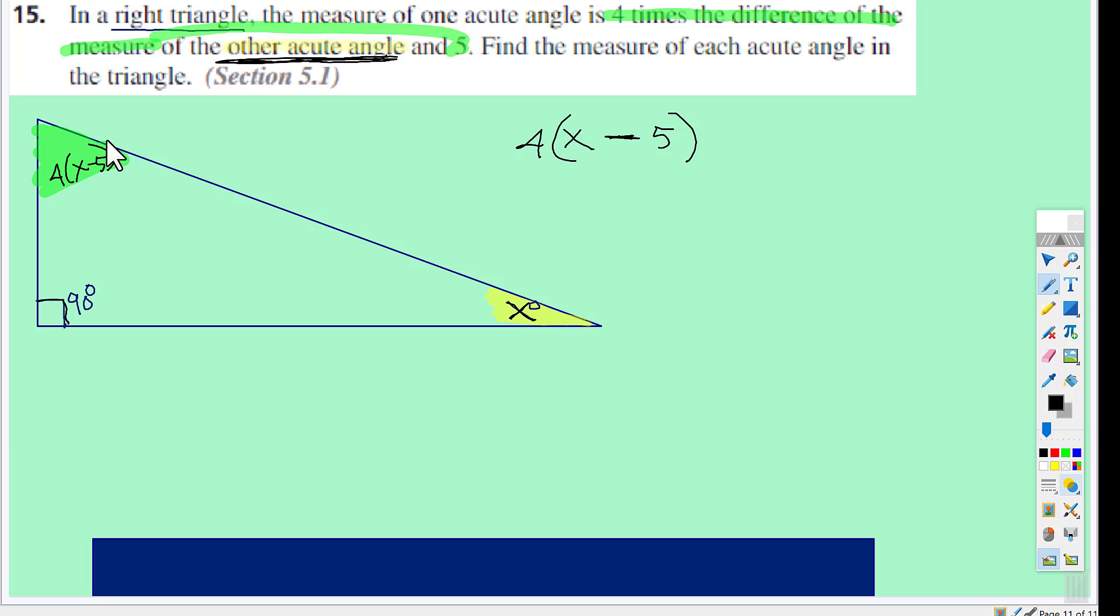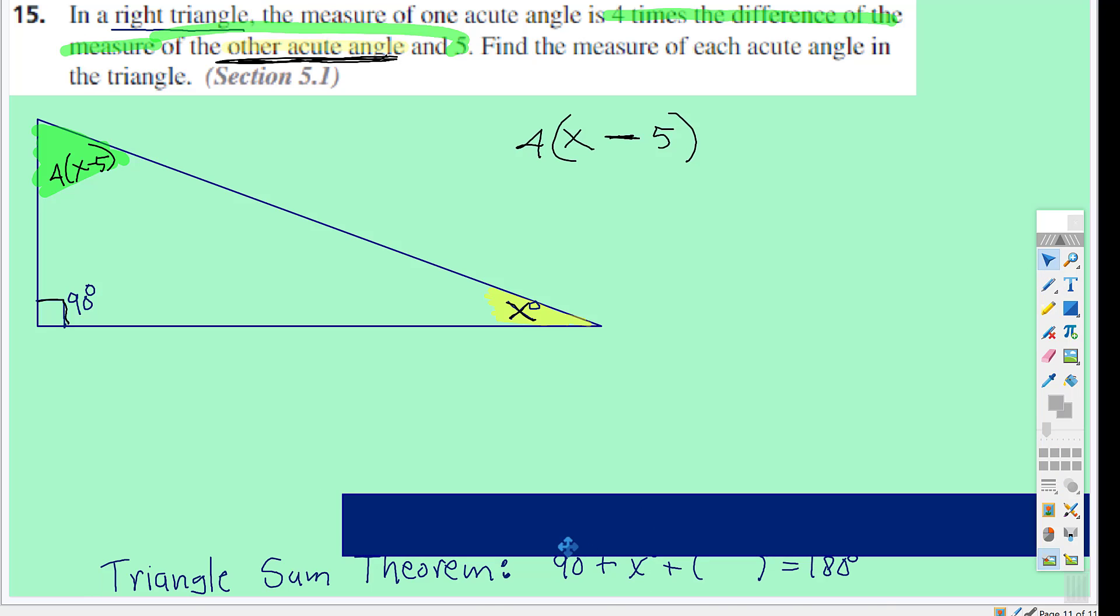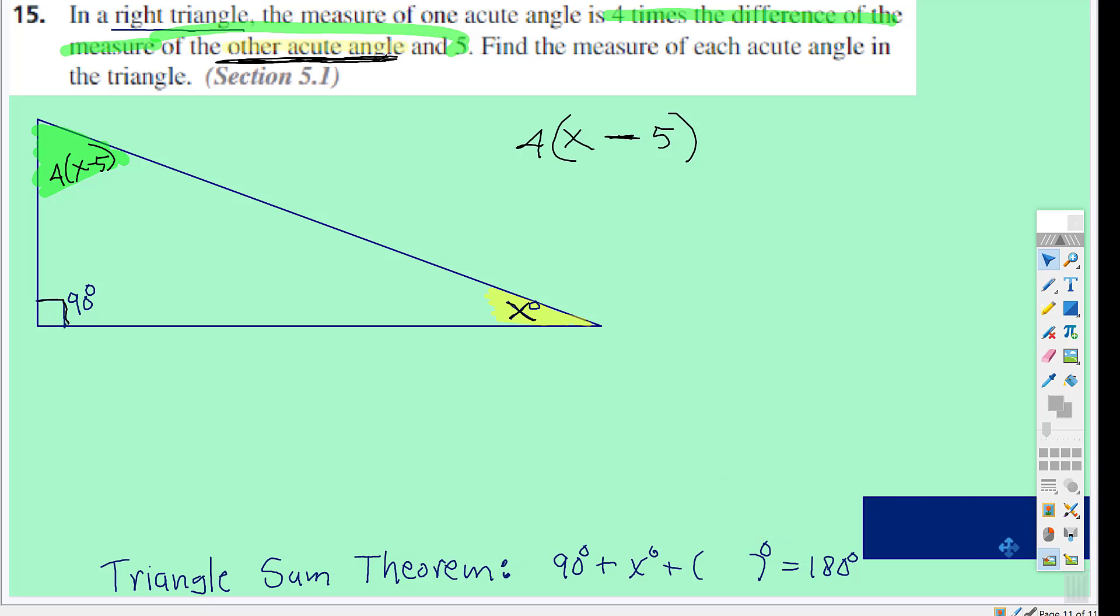Well, what do we know about three angles? We have the triangle sum theorem. So we know that 90 degrees plus x degrees plus four times x minus five degrees is equal to 180 degrees. And then you solve.